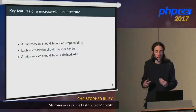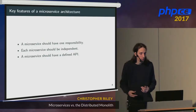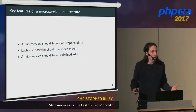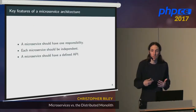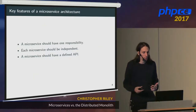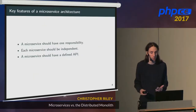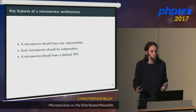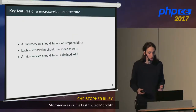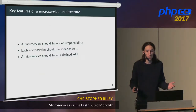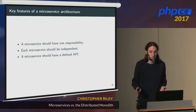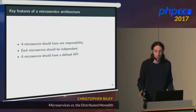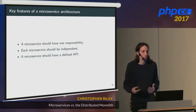Microservices should have a defined API. They're always a component in a larger system, so it's really important that each one defines an API through which other services can use that microservice. Our industry is quite keen on REST APIs over HTTP, but don't feel constrained to this — RPC-style APIs are just as useful. Even a microservice that accepts syslog-formatted packets on a particular port is still exposing a very useful API if that microservice's responsibility is log aggregation. An API doesn't have to be confined to just REST.